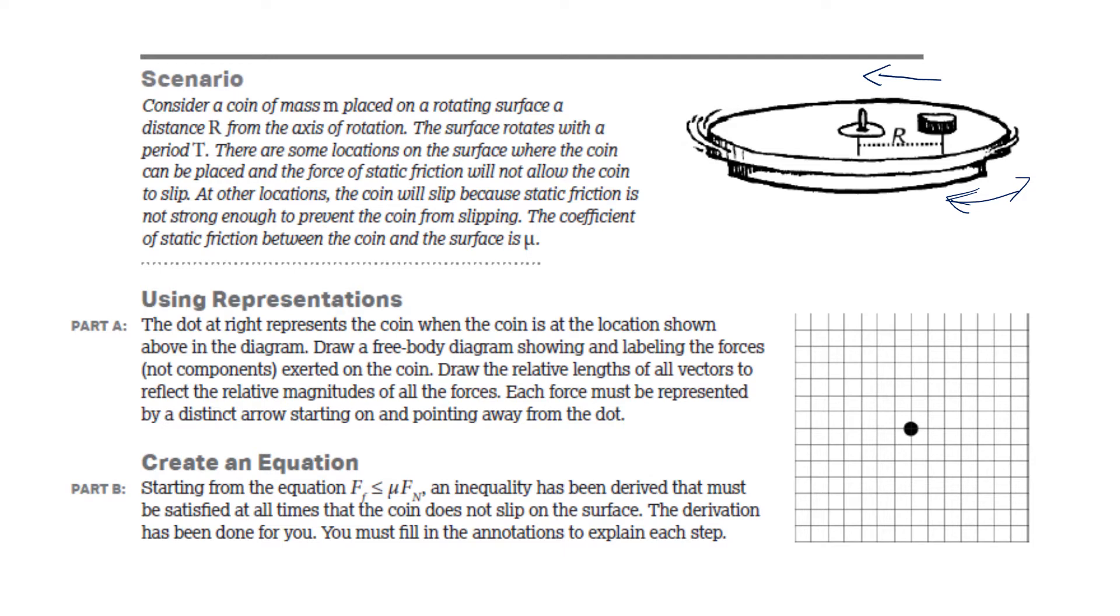Part A wants you to draw a free body diagram. I think there are two vectors that are obvious. There's always going to be mg, so I'm going to make it maybe around four boxes, and then there's going to be normal force. So here's normal force, here's the weight, done.